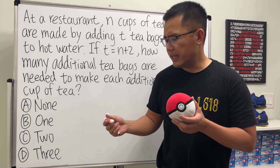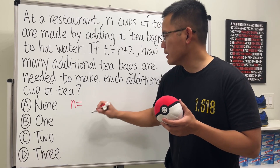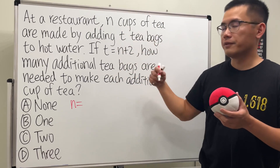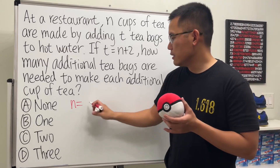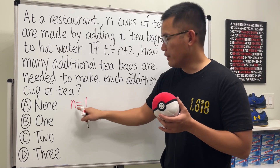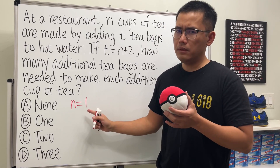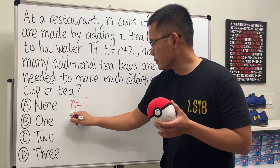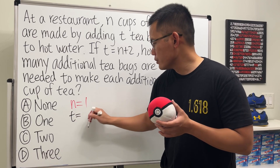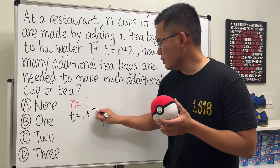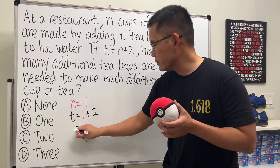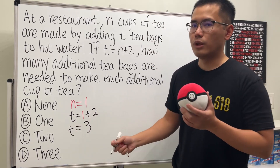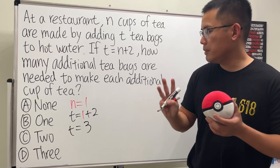That's just n is equal to 1, isn't it? Because remember, n is the number of cups of tea. So if n is equal to 1, it looks like we can just put a 1 here. So t is equal to 1 plus 2, and that gives us t equal to 3 — so that means we should have 3 tea bags.